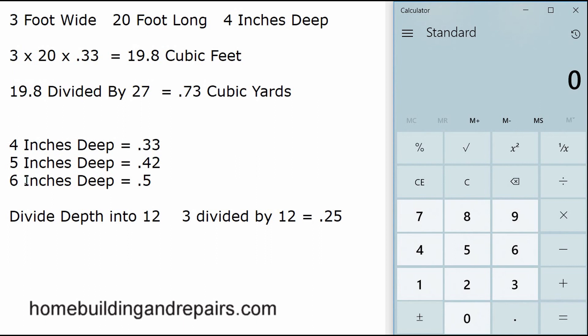A four-inch deep sidewalk, five-inch deep, six-inch—these are going to be the decimals. You can get this by simply dividing the depth into 12. Three divided by 12 would equal 0.25, and this 0.25 would go up here as the decimal we're going to use for cubic feet.